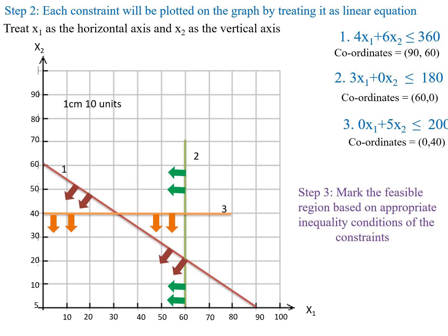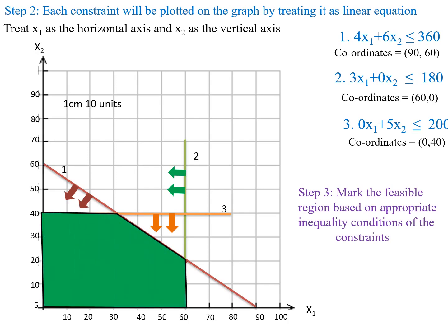The next step is to mark the common region which satisfies all the constraint regions. This common region is called the feasible region. Here OABCD is the feasible region.